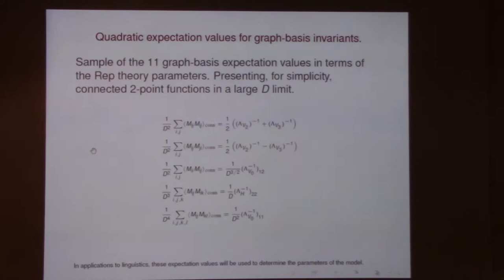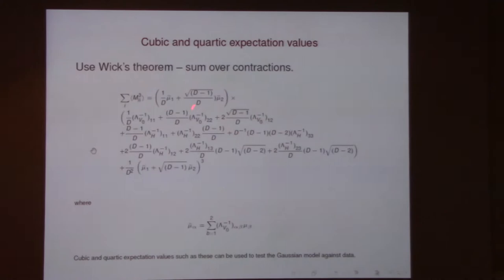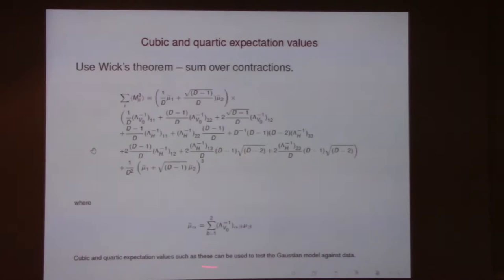So the quadratic expectation values can be computed. In applications to data, you take all the quadratic invariants along with the linear invariants — same as before — use them to determine the lambda parameters, then go back to the theory, compute the cubic and higher expectation values. There is an explicit formula you can derive. As usual you're doing a Euclidean integral with matrix variables and using Wick's theorem with the contractions. Since you know the two-point functions, you can work out all these things.